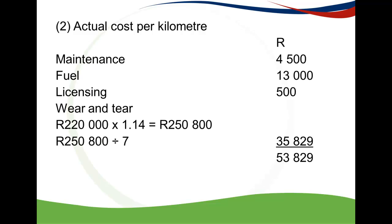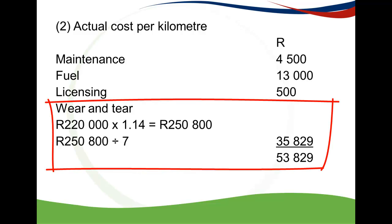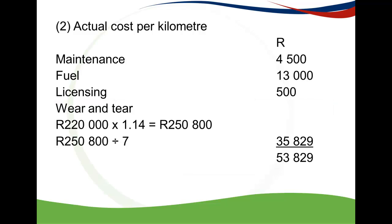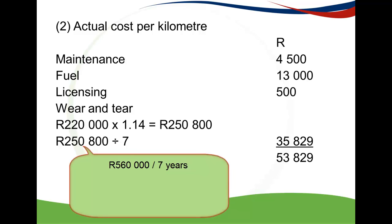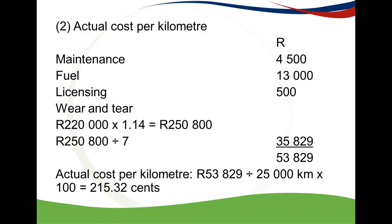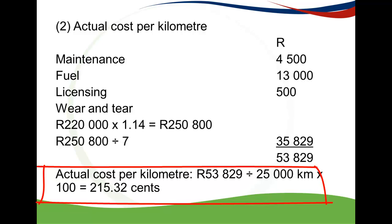Since actual costs are provided, we add them together: maintenance 4,500, fuel 13,000, licensing fees 500. Wear and tear is never given — you must calculate it. Take the car cost of 220,000, multiply by 1.14 to include VAT, then divide by 7 years to get the wear and tear charge. Remember, if the car cost exceeds 560,000 Rand, wear and tear is capped at 560,000 divided by 7. The same applies to finance charges. Add all costs together and divide by the total kilometres of 25,000 to get the actual cost per kilometre.